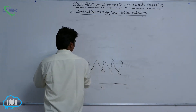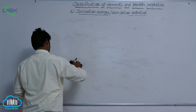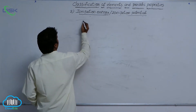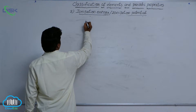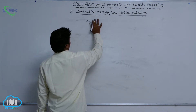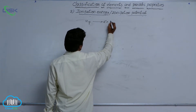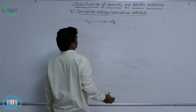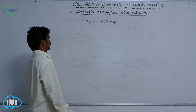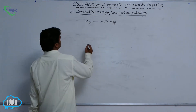The ionization energy reaction is: M in gaseous state gives rise to an electron plus M⁺ in gaseous state. This is the chemical reaction for first ionization energy.